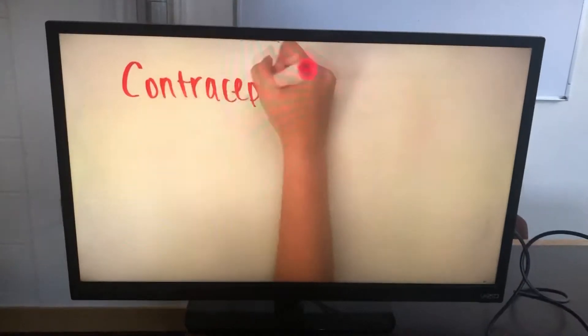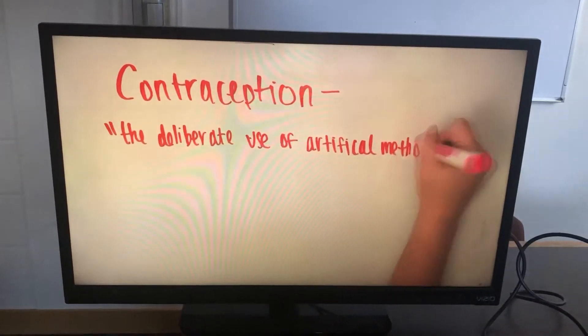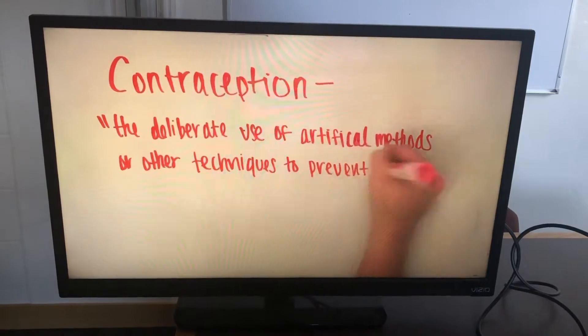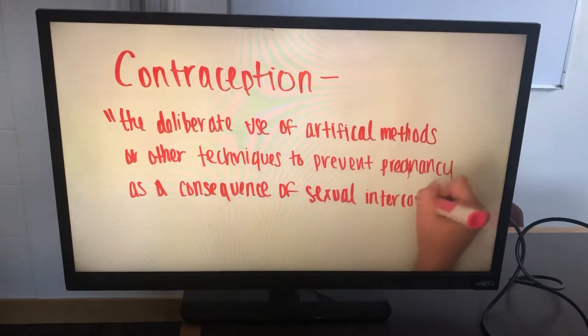Now, let's back up. Contraception is the deliberate use of artificial methods or other techniques to prevent pregnancy as a consequence of sexual intercourse, from Merriam Webster.